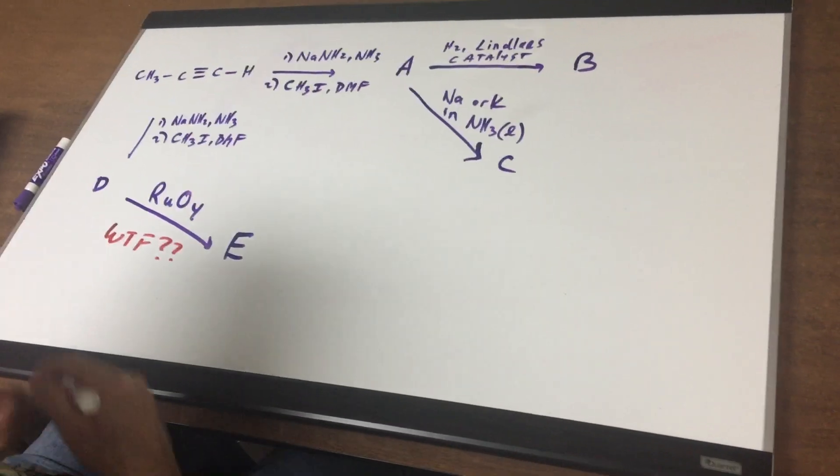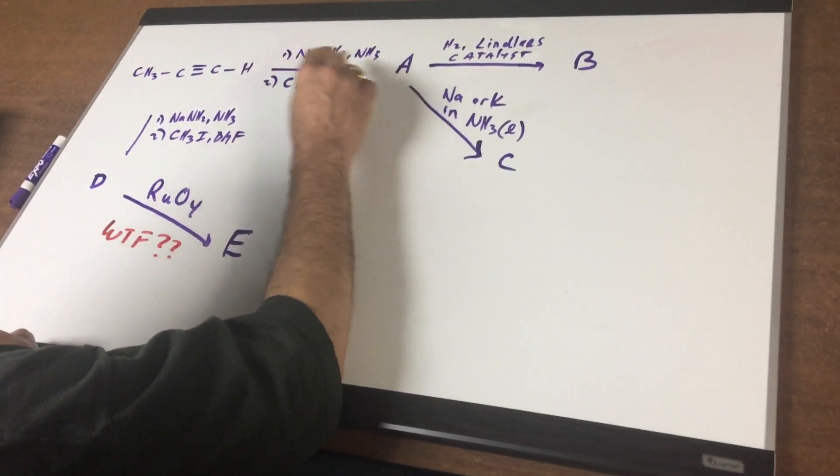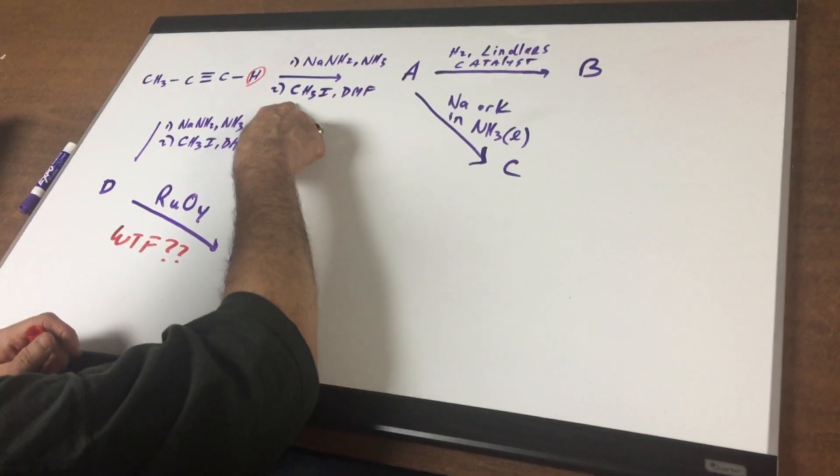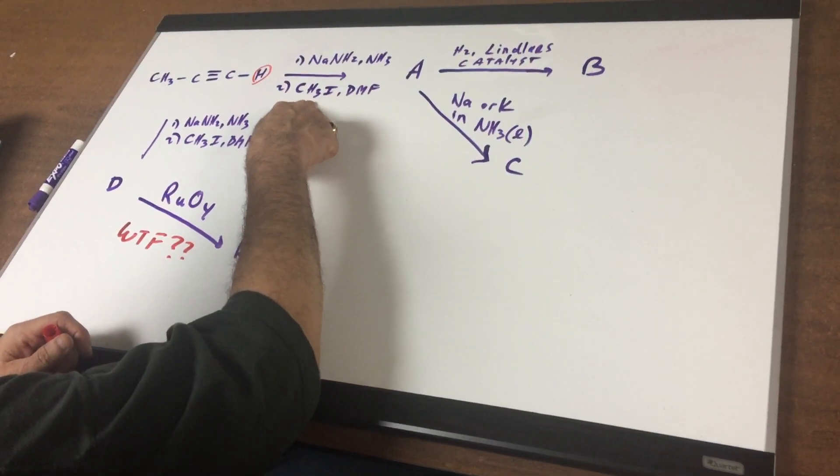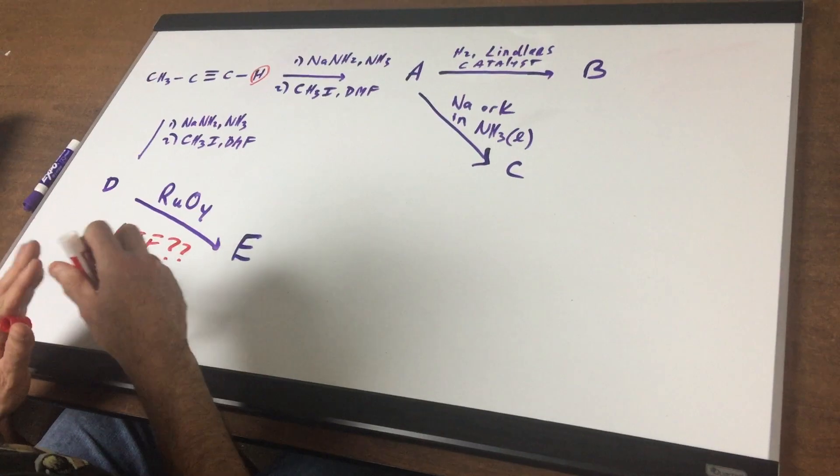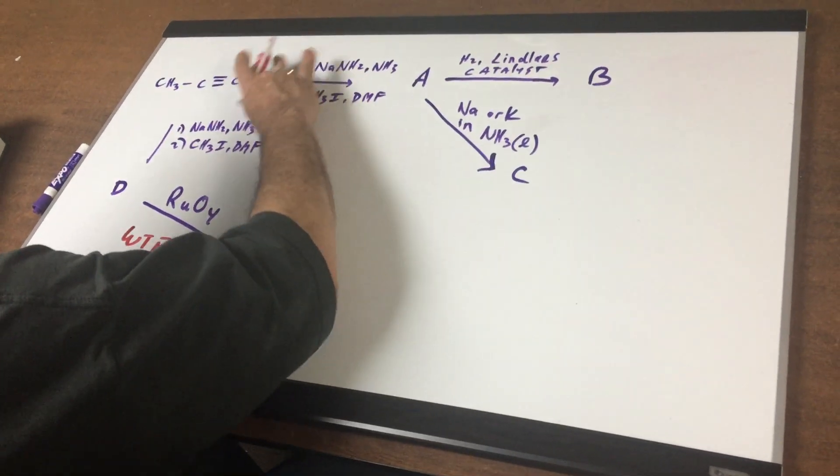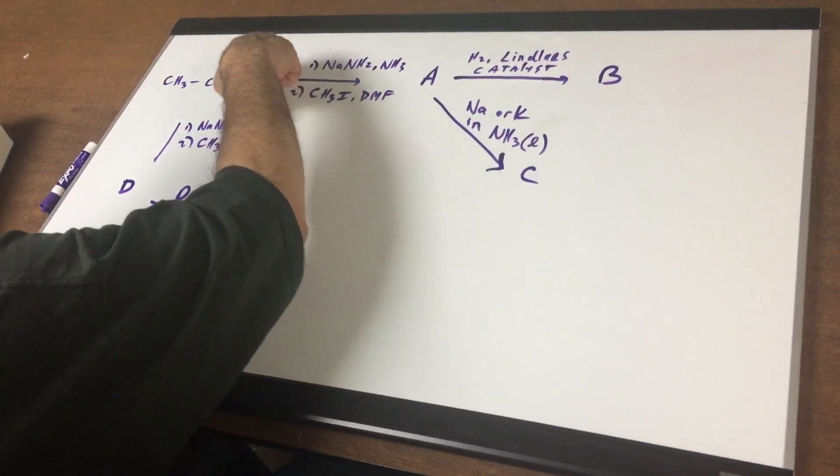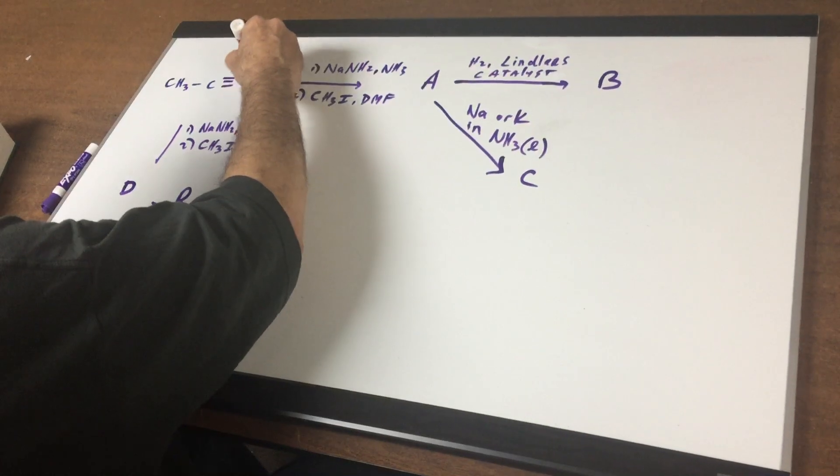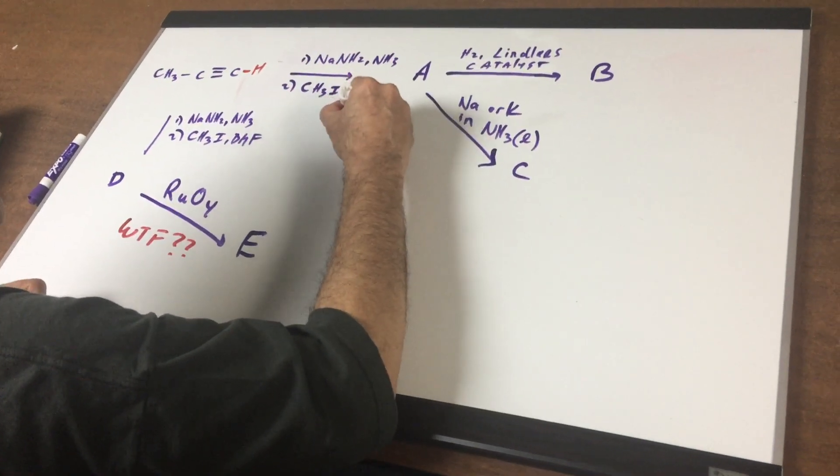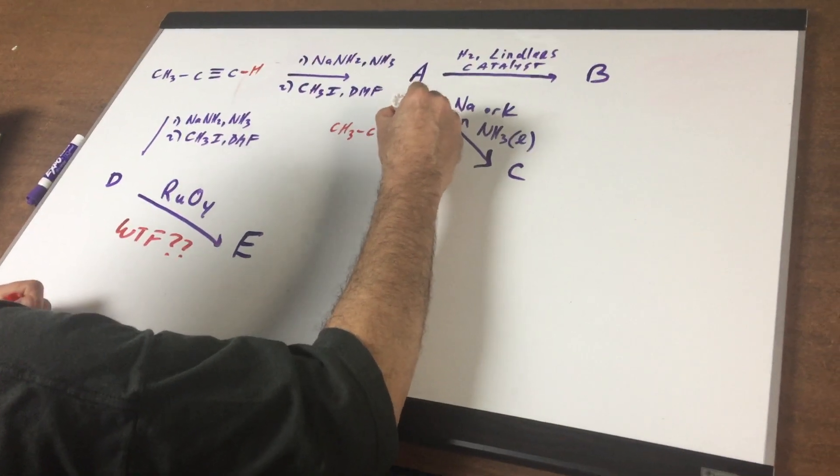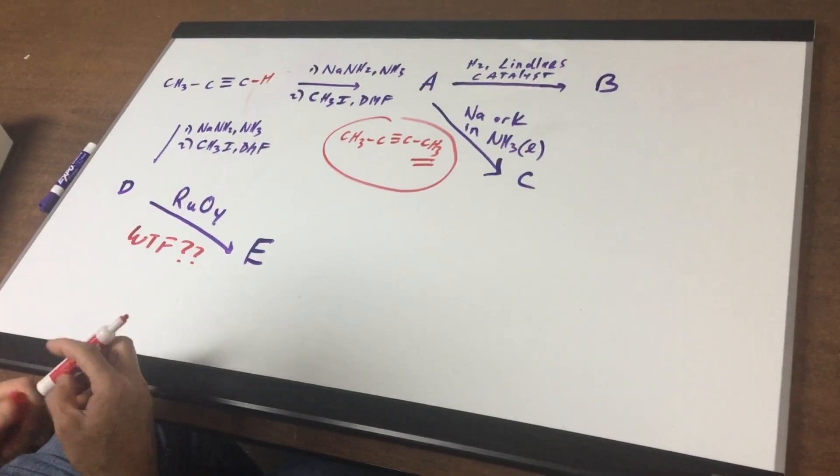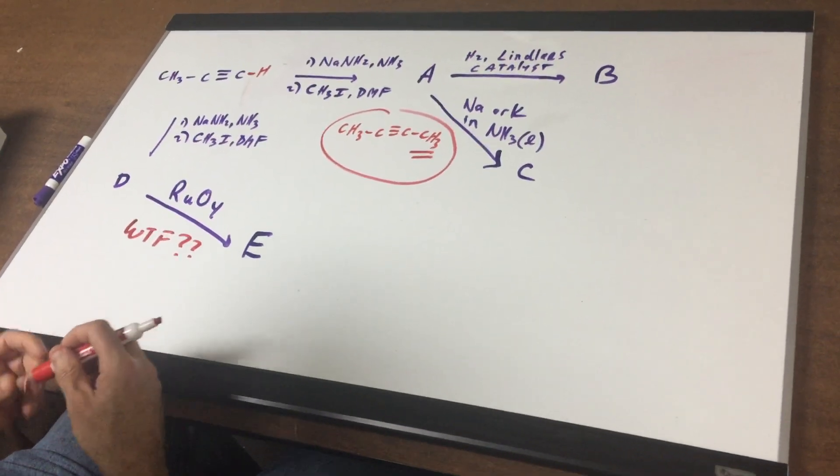Now in the first step it says NaNH2 and ammonia. All that's going to do is to remove off the acidic proton and then step two we do a simple SN2 attack. So when we remove off the first proton here we're gonna end up getting this and then this simply attacks and captures the methyl. So putting that all together you would simply get for A this molecule here. So we've just added on the CH3 group. I think that's straightforward. So we built on an R group.